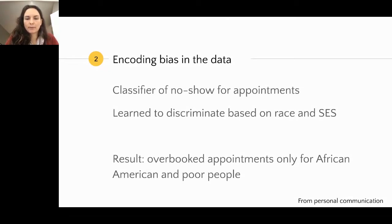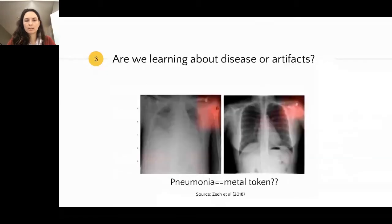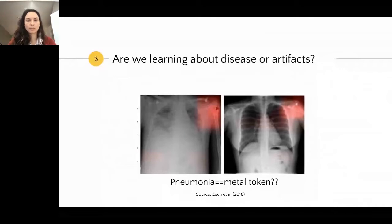Are we learning disease or artifacts? A 2018 paper found that an algorithm promised to detect pneumonia was actually detecting a metal token in the image — a much stronger signal that had nothing to do with pneumonia. This happens a lot. While some debate whether explainability is important, I believe it's critical not for simplifying models, but for debugging: having some explainability to know the reason behind a machine learning decision prevents us from deploying algorithms that are detecting the wrong thing and won't generalize.